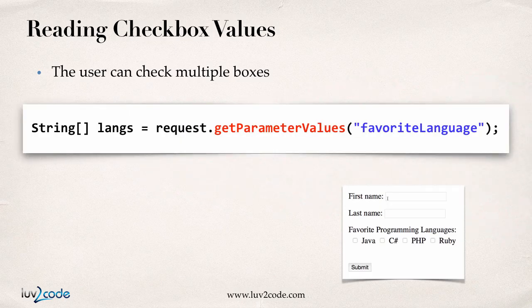Now that the user can check multiple boxes, we need to change our coding a little bit in our JSP page. In our JSP, we won't be able to use the shortcut syntax of the dollar sign curly brace param, because now we're going to get a lot of different values back. What we can do instead is make use of the request object — specifically request dot getParameterValues, giving it the parameter name favorite language. This method will actually return an array of strings, because they can choose multiple programming languages.